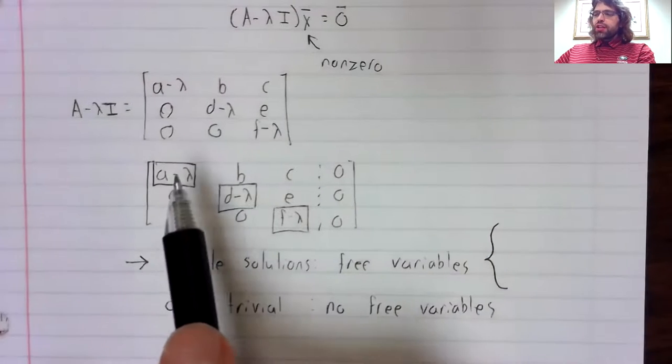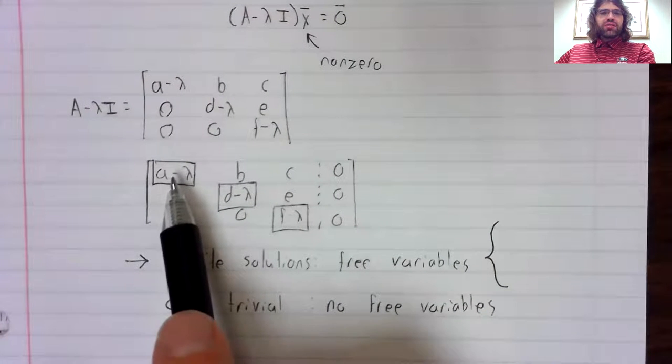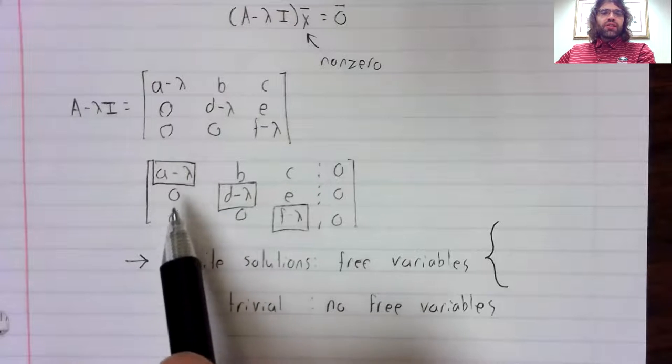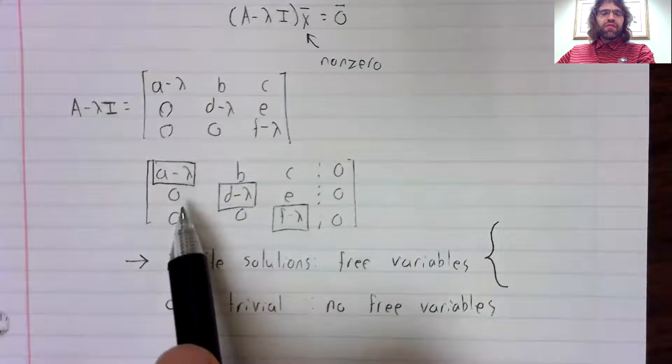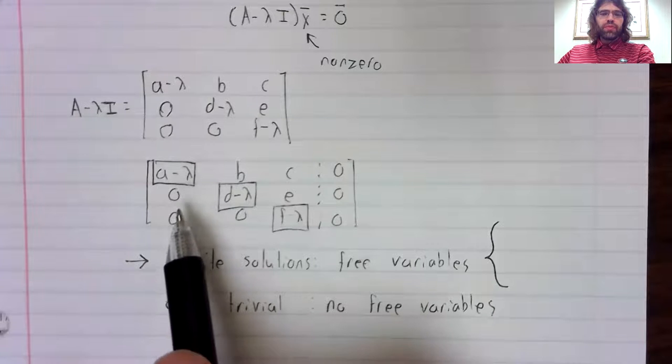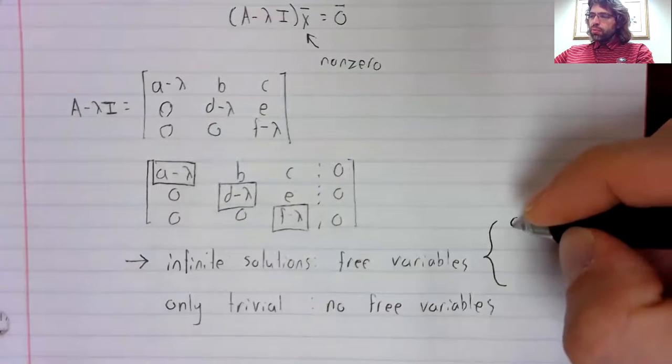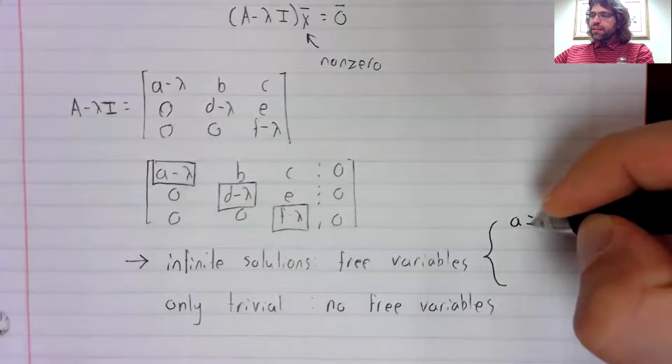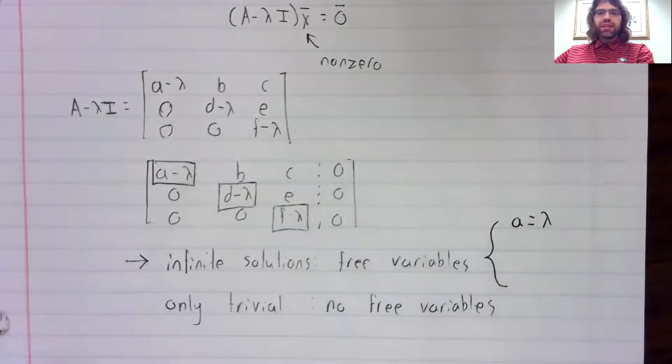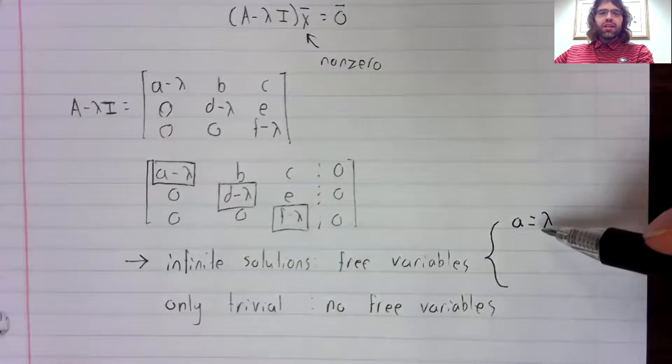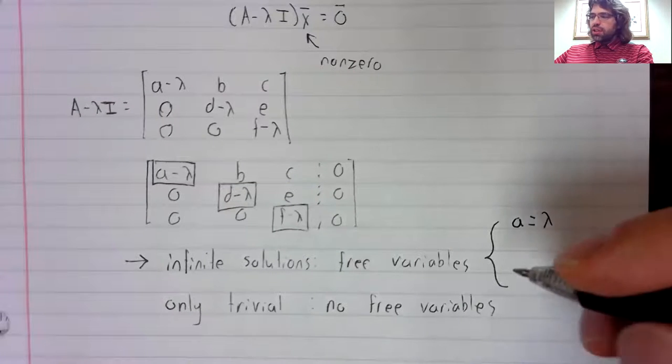On the other hand, if a minus lambda were zero, then this first column would not be a pivot column, and we would have a free variable. So that happens if a minus lambda is zero, or if a equals lambda.